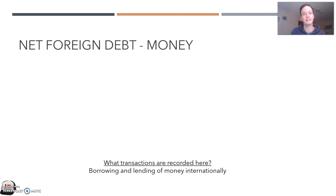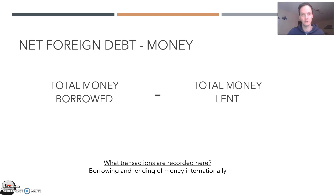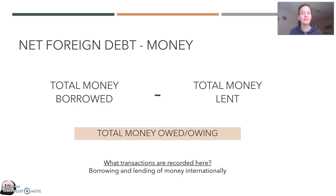The first one is net foreign debt. When you're talking about net foreign debt, the key idea is money. I'm going to give you some key ideas to distinguish between net foreign debt and net foreign equity — and for net foreign debt, your key idea is money. Net foreign debt is the total money that Australia borrows from overseas, minus the total money that Australia lends to overseas.